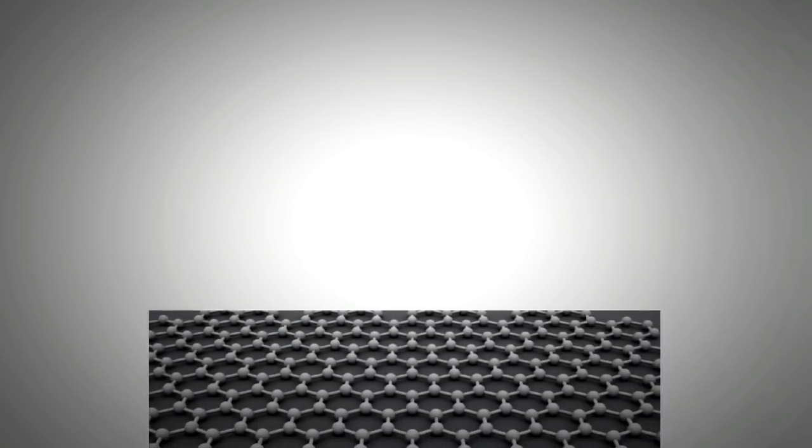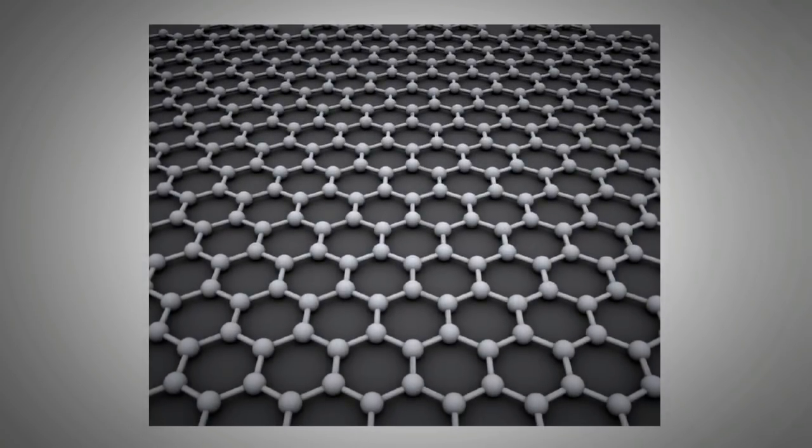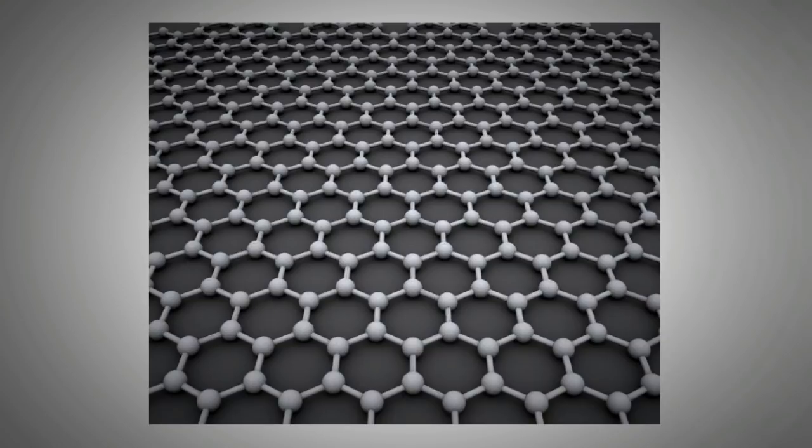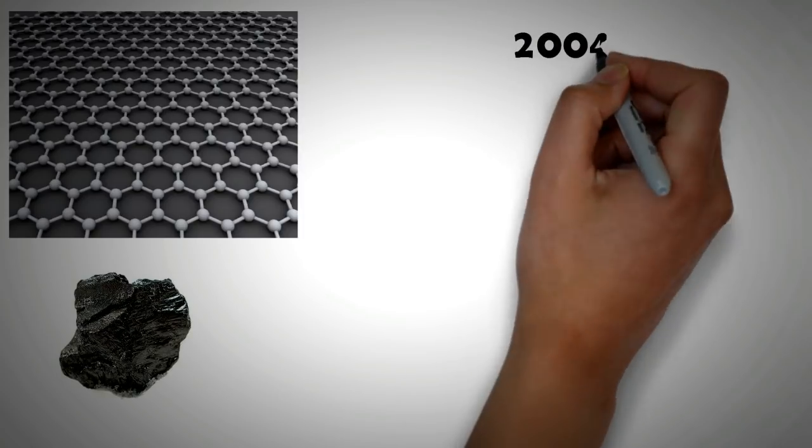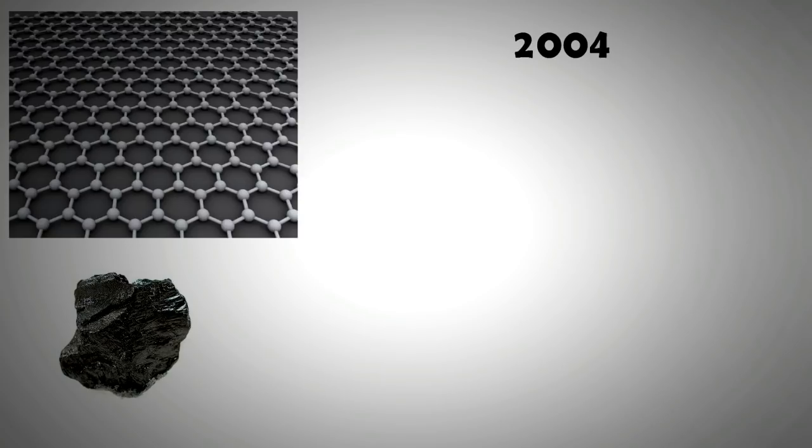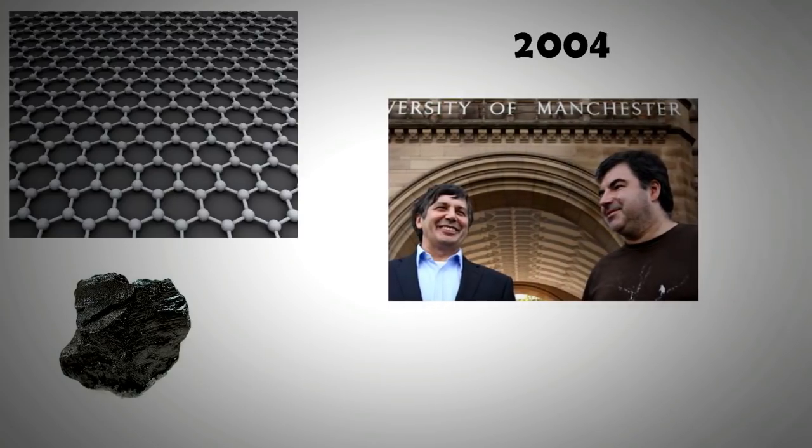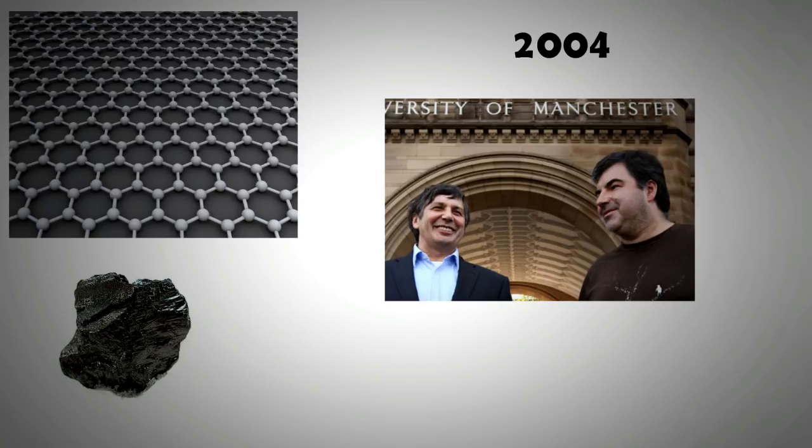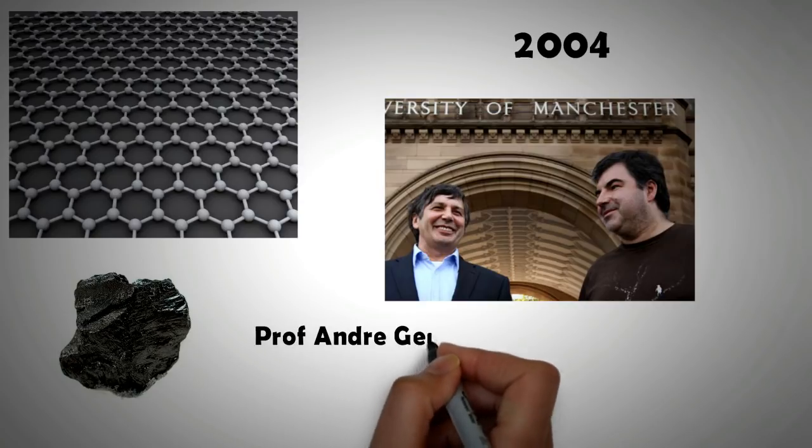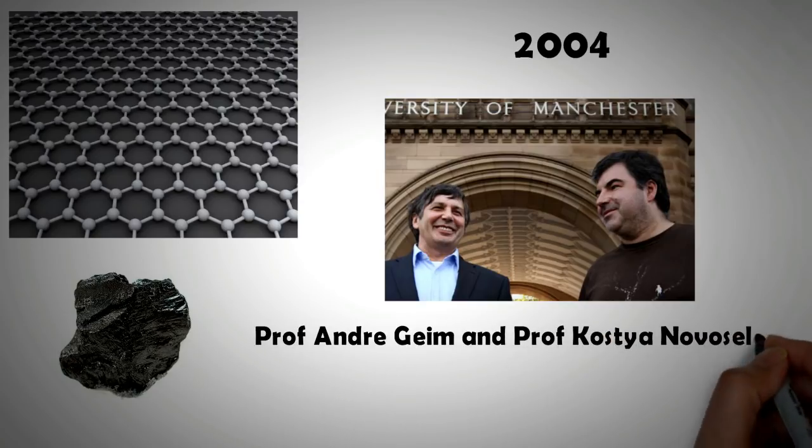The presence of laminate structures in certain carbon-based compounds was known as early as the 19th century. The extraction of these structures in a cost-effective manner has since remained a challenge. It wasn't till 2004 that two scientists at the University of Manchester were able to isolate a single layer thick crystallite from bulk graphite. This two-dimensional single layer of crystalline carbon became known as graphene.